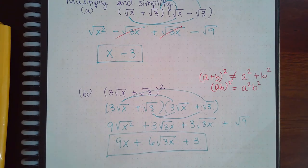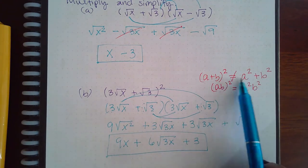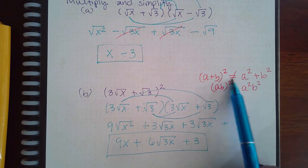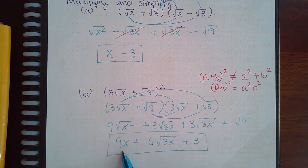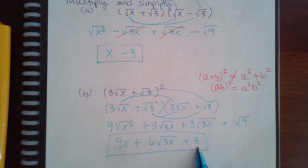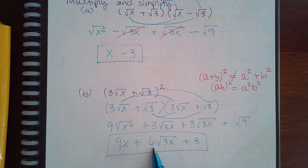So be careful because if I would have erroneously tried to apply this rule that doesn't exist, and I would have squared both of these, I would have ended up with 9x in the end, and I would have ended up with 3 in the end, but I would not have gotten this middle term. It would have just been completely missing, and therefore the response would have been incorrect.